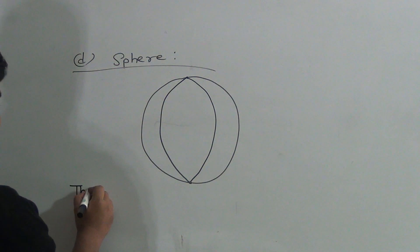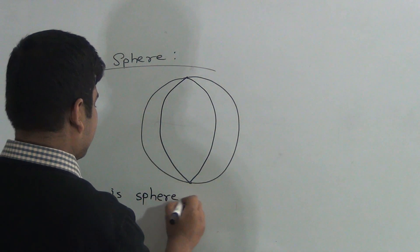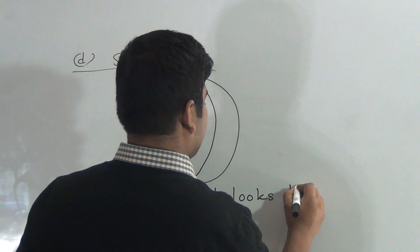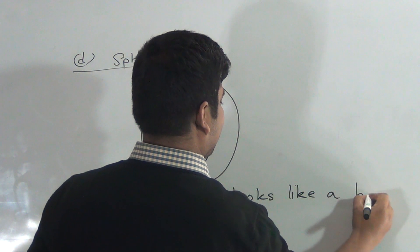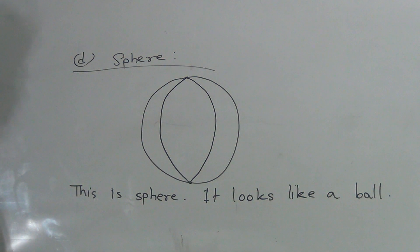Now write. This is sphere. It looks like a ball. This is sphere. It looks like a ball.